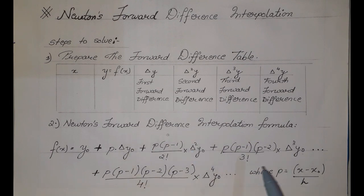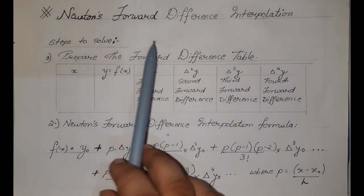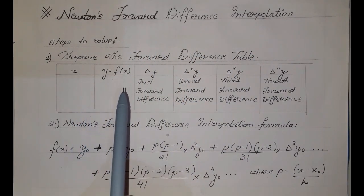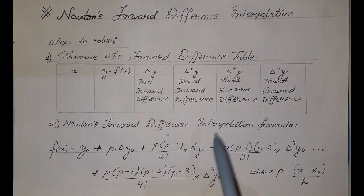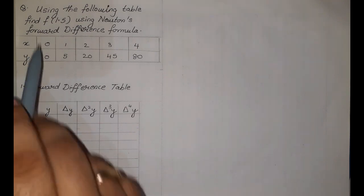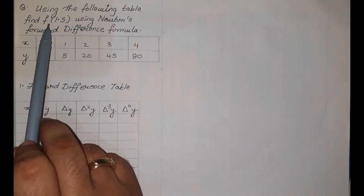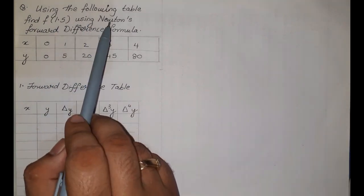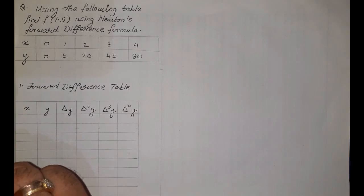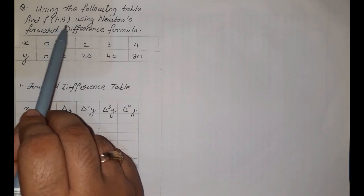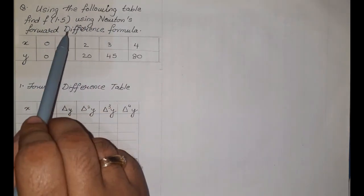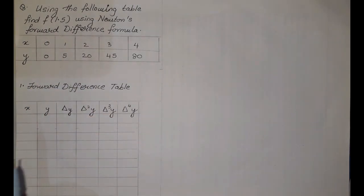To summarize how to use this formula: first create the forward difference table to find the forward differences, then substitute the values from the table into the formula to get the final answer. Now let us see the very first example sum. Using the following table, find f(1.5) using Newton's forward difference formula. The values of x and y are given, and we are asked to find f(x) when x = 1.5.